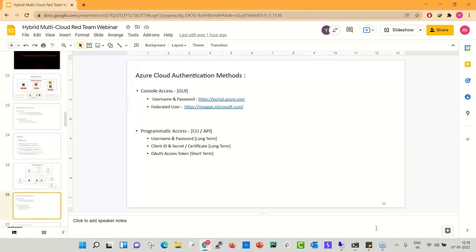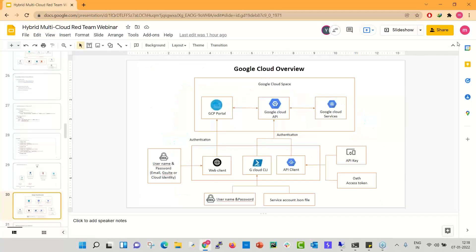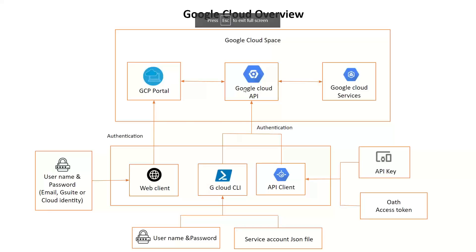In our subsequent sessions, we will discuss in detail what's happening in the background, how to authenticate with CLI, and how to move from CLI access to portal access. If you don't have portal access but have CLI access via federation, how can you leverage that? These details will be covered later. Now moving to GCP: GCP also has the same three-tier model. The portal is at console.cloud.google.com.